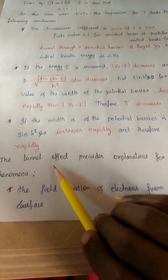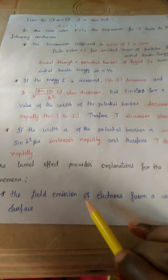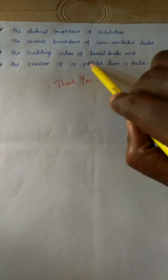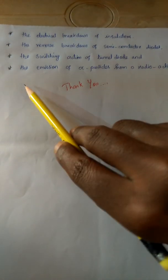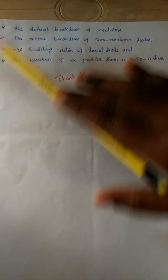The tunnel effect provides explanations for the following phenomena: field emission of electrons from a metallic surface, electrical breakdown of insulators, reverse breakdown of semiconductor diodes, switching action of the tunnel diode, and emission of alpha particles from a radioactive element.